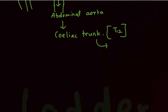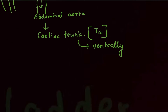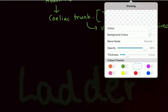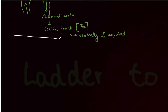The branches of the celiac trunk are present ventrally, meaning on the anterior side, and they are unpaired. Unpaired means they won't have a companion — for example, there is only one left gastric artery and one short gastric artery. There cannot be another left or short gastric artery. The celiac trunk has three major branches.